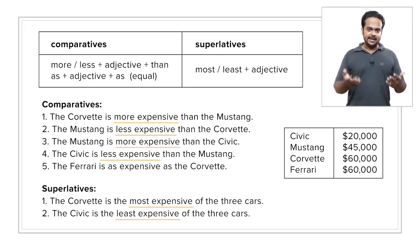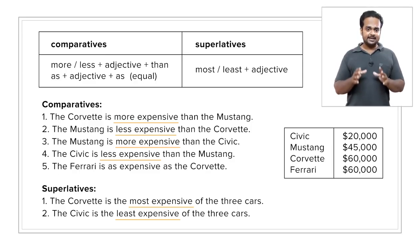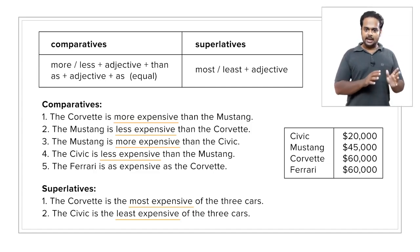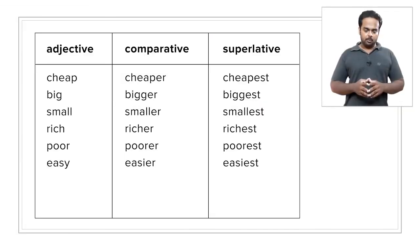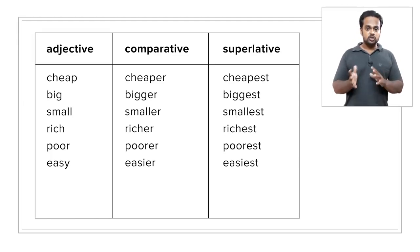So what kinds of mistakes do students make with comparatives and superlatives? Well, mistakes commonly occur in the ER, EST, and irregular forms of adjectives. With some adjectives, instead of saying more and most, we add the endings ER and EST. For example, we don't say 'more cheap,' we say 'cheaper,' and we say 'cheapest,' not 'most cheap.'